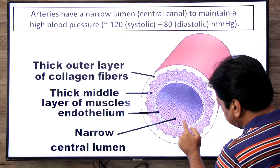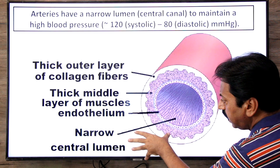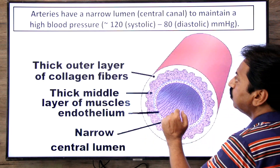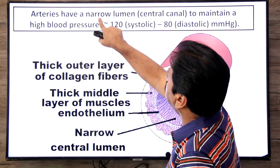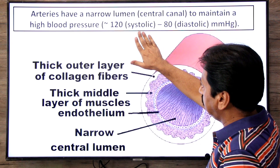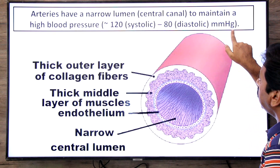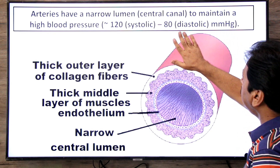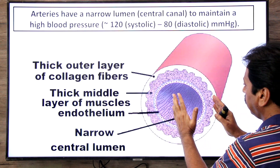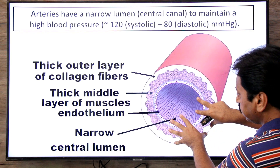If we look at a cross-section of an artery, the central canal inside is called the lumen. The artery's lumen is narrow — why? To maintain high blood pressure, because blood pressure is high in arteries. In normal blood pressure, systolic pressure is maintained at 120 mmHg and diastolic at 80 mmHg. The narrow lumen of arteries helps maintain this high blood pressure.